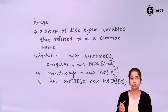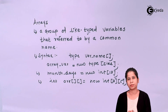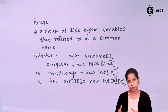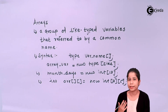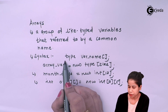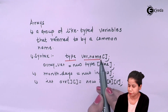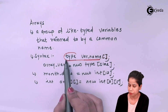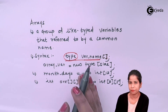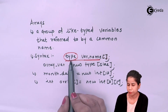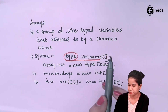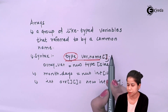Arrays normally have two things: one is a declaration part and the second one is an initialization part — same as variables. In variables we have declaration and then definition and initialization. So here also we have the same things. The syntax for declaring an array is: type, then variable name, and then square brackets. You have to specify any primitive data type or user-defined data type, then give some identifier for the collection, and then square brackets. For example: int studentMarks[].